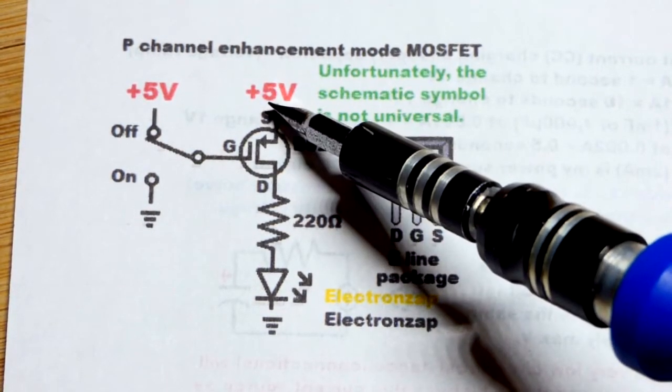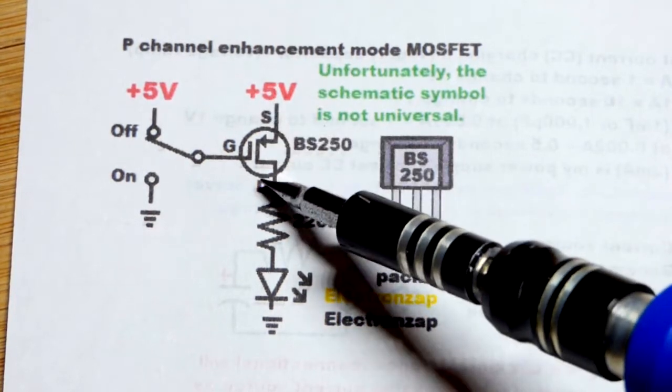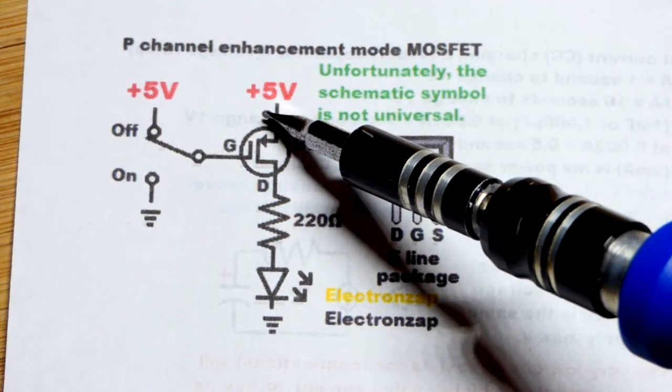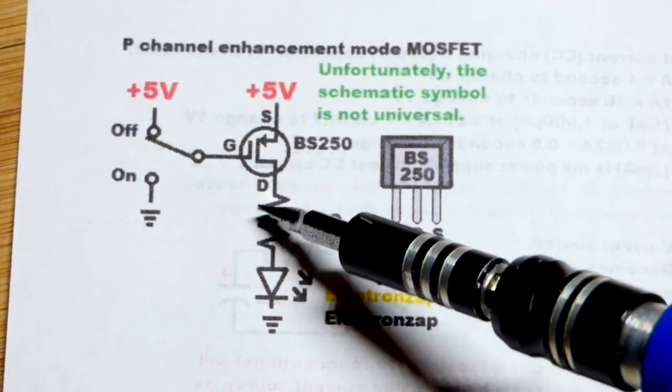The source for the P-channel enhancement mode MOSFET is more positive, drain more negative. Whereas the N-channel, the drain was more positive, source was more negative.